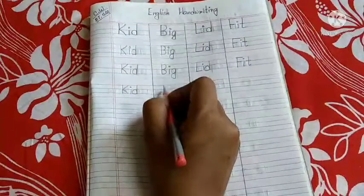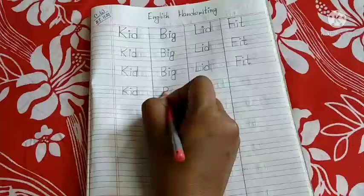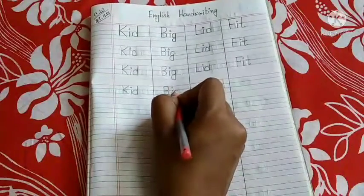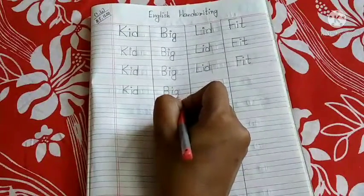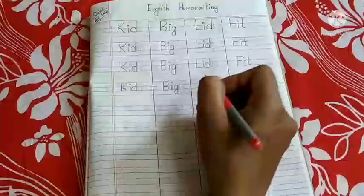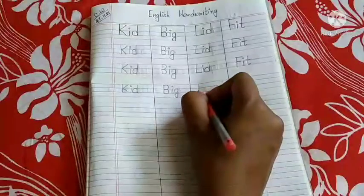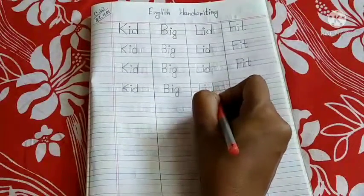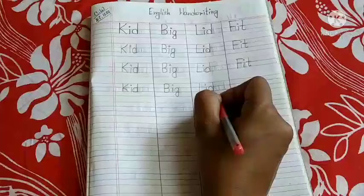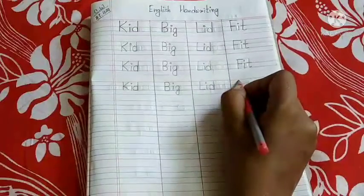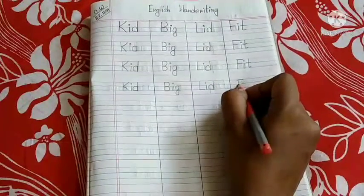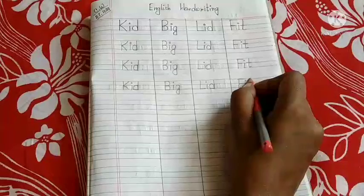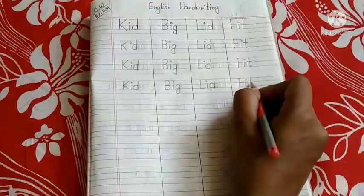B, I, G — big. L, I, D — lid. F, I, T — fit.